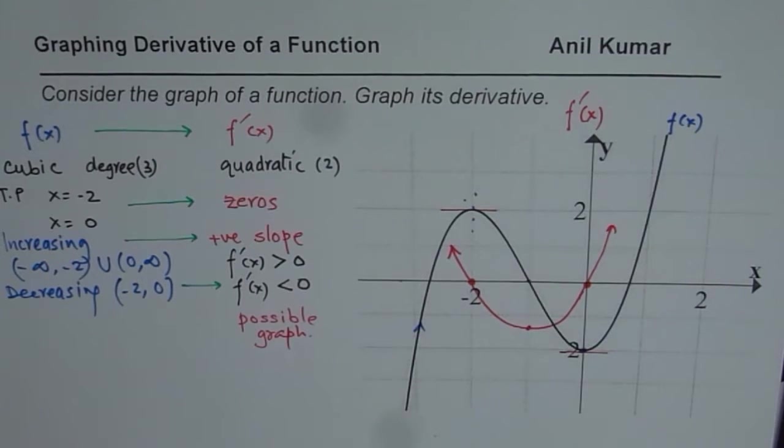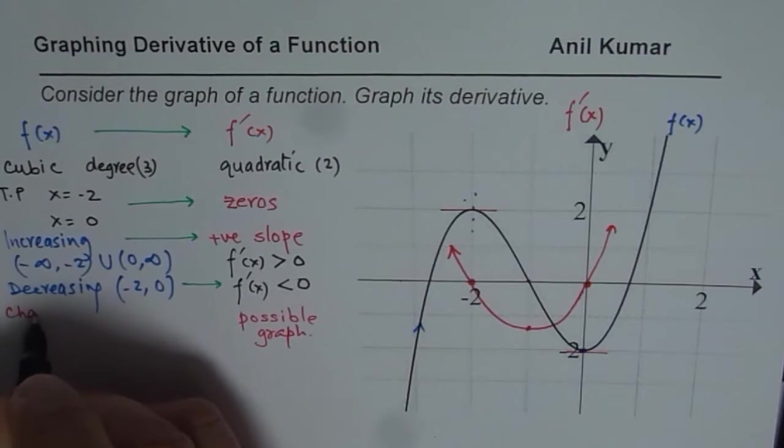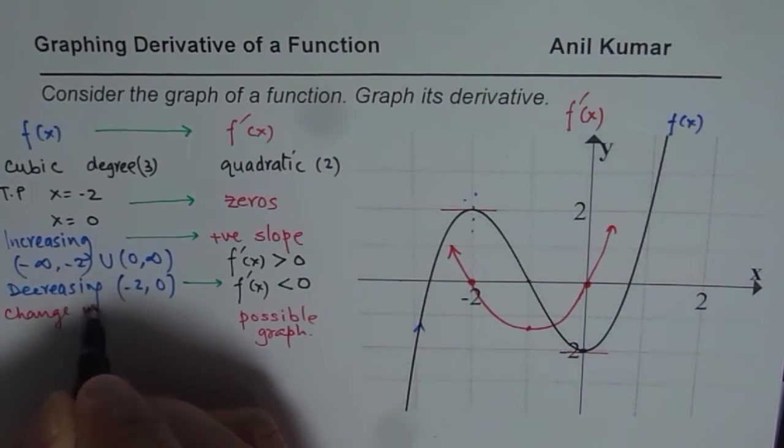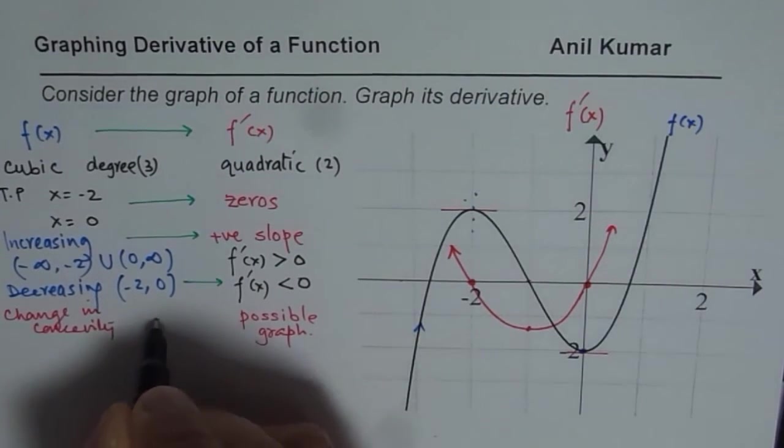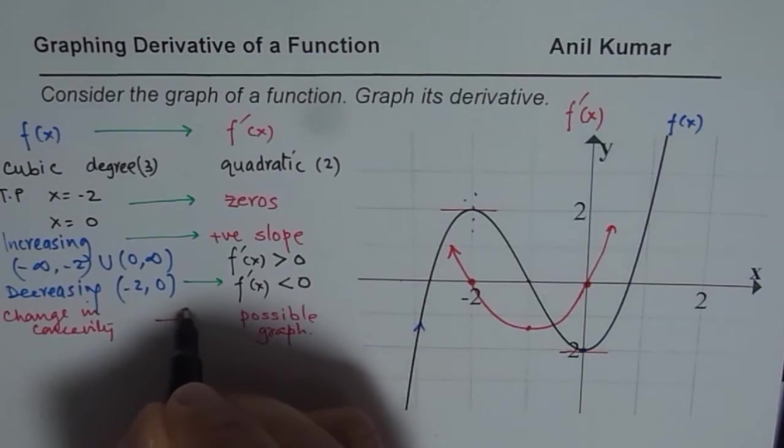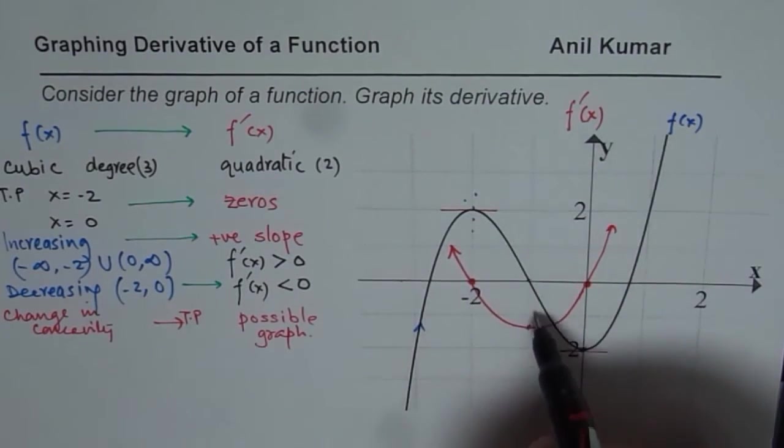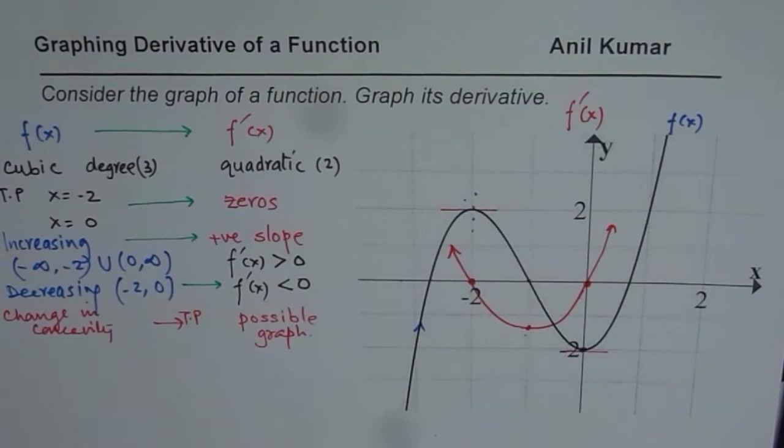So change in concavity, so let me write down here, you may learn later anyway. So change in concavity will result in turning point, turning point. It could be maximum or minimum. In this case, it is concave down to up and therefore it is minimum.